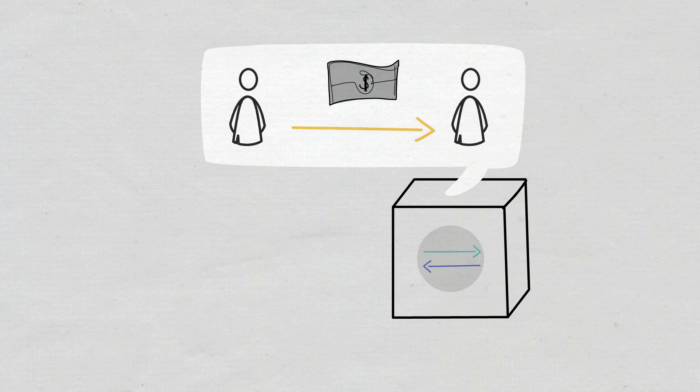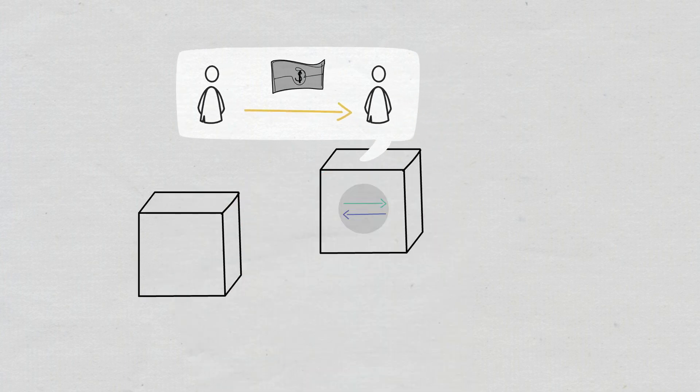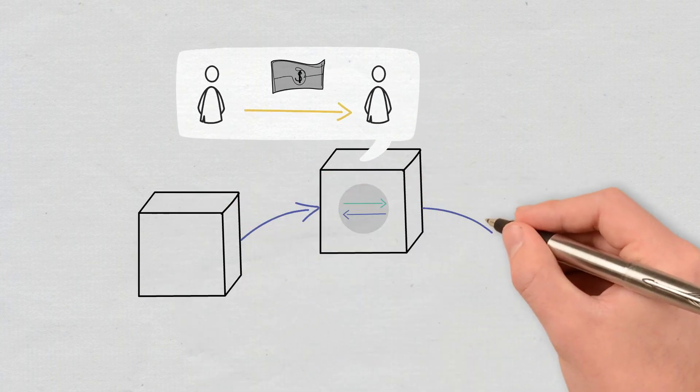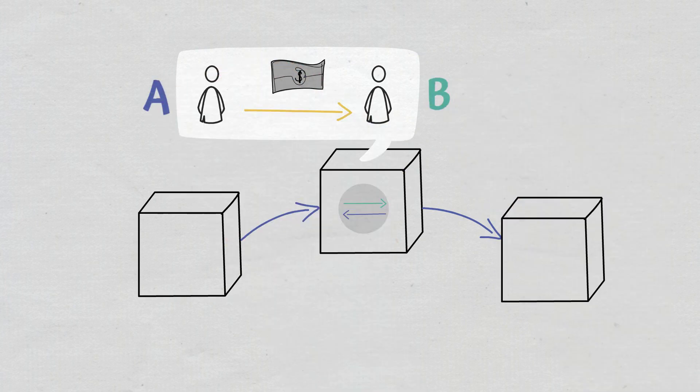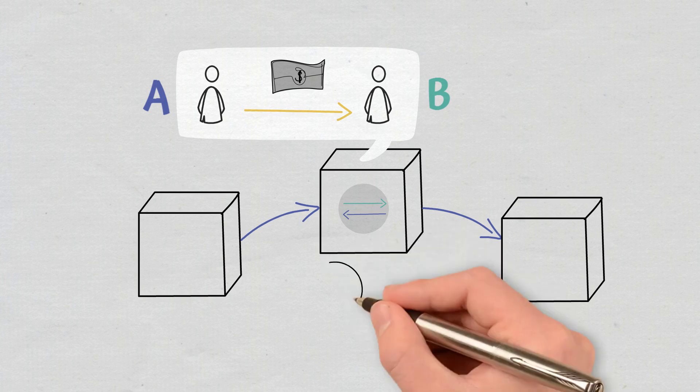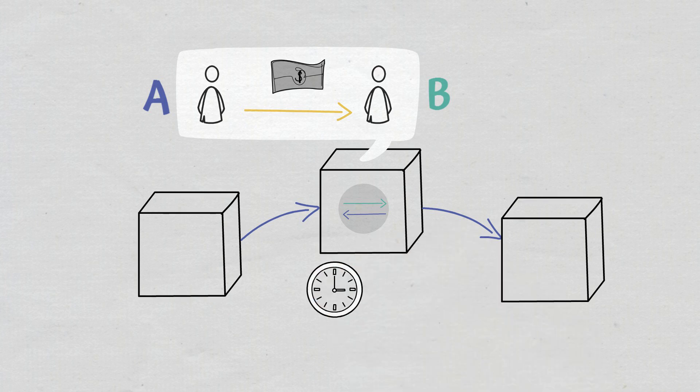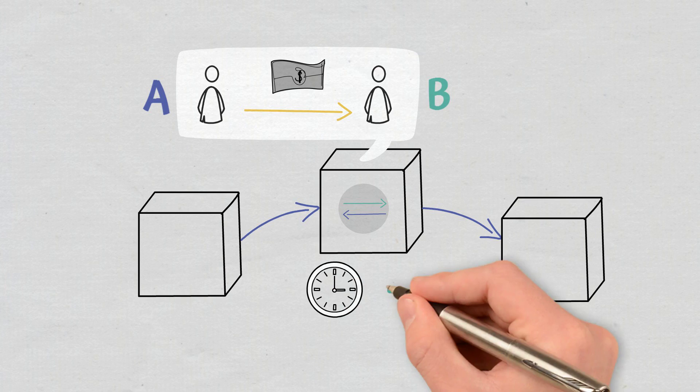Every block is connected to the ones before and after it. Together, they create a chain of data as one asset is moved from point A to point B when ownership changes. The blocks record the exact time and sequence of transactions. They are linked securely so that no alterations are made.